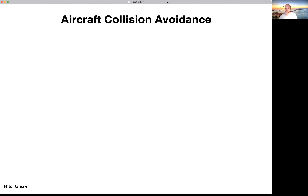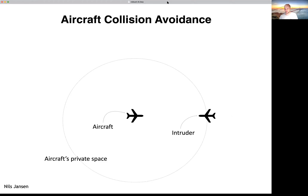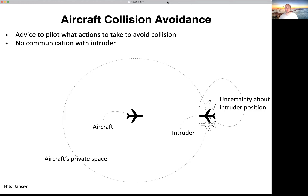Let's look a bit into aircraft collision avoidance, originally coined by Michael Kochendörfer. We have an aircraft with a private space — a safe area. There can be an intruder, and because of uncertainty in sensor readings, we have uncertainty on the exact position of the intruder, which compounds over time. We assume a collision avoidance system gives advice to the pilot on what actions to take, and that there is no direct communication with the intruder.